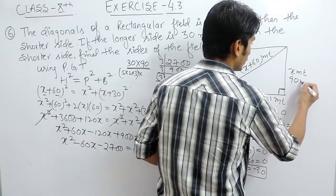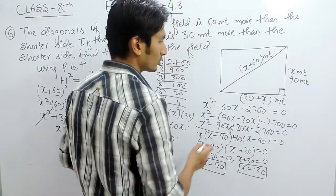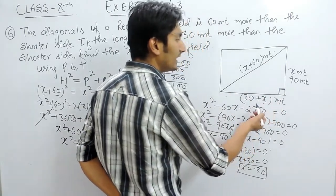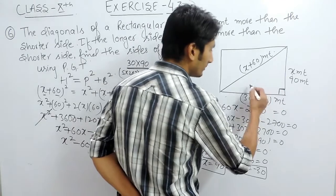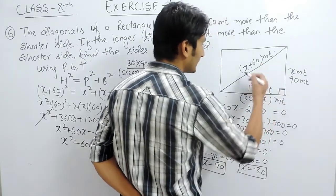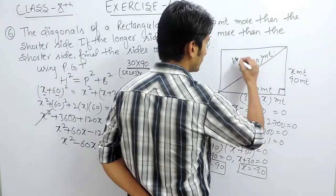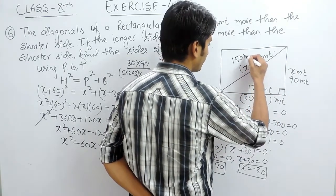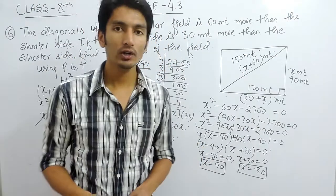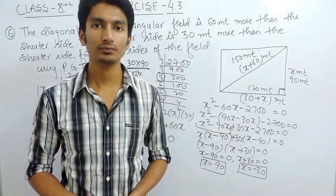Since x represents the shorter side of a rectangular field, it cannot be negative. Therefore x equals 90 meters is the shorter side. The longer side is 30 meters more, so it is 120 meters. And the diagonal is 60 meters more than the shorter side, so it is 150 meters. This is how you can solve this particular question. Thank you.